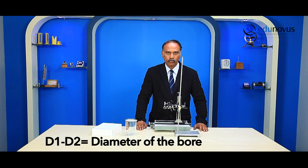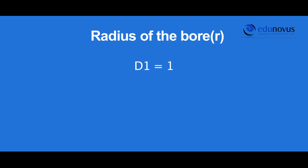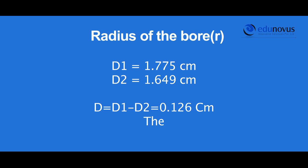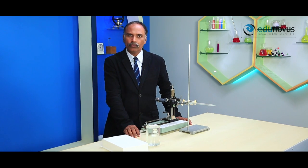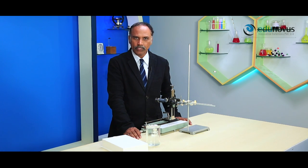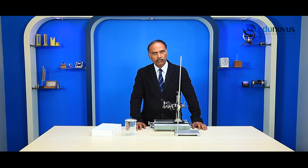The difference of D1 and D2 gives us the diameter of the bore, and half of this gives the radius r of the bore. Knowing the height of capillary rise h and the radius of the bore r, we calculate the surface tension of the water. We repeat the same procedure two more times and take the mean value as the surface tension of water.